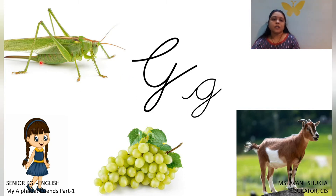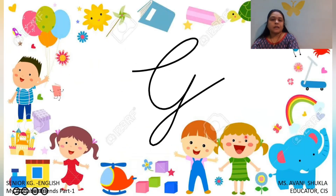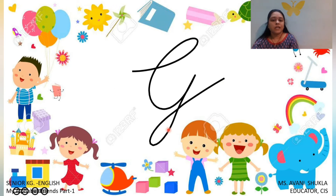Okay, so these all are the objects of the G sound. See this — this is Capital Cursive G. So you have to remember this letter. This letter is called Capital Cursive G. G says G.